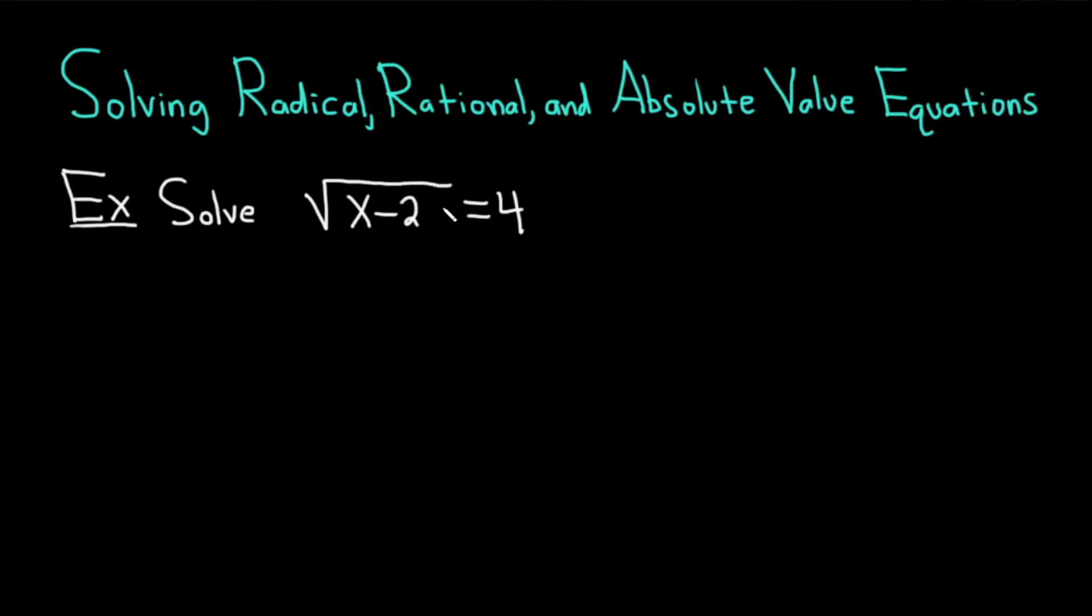Let's go ahead and start by doing an example of a radical equation. Directions say solve the square root of x minus 2 equals 4. Solution. Let's start by writing down our equation once again. So the square root of x minus 2 is equal to 4. And we're looking for x, but it's trapped inside the square root.